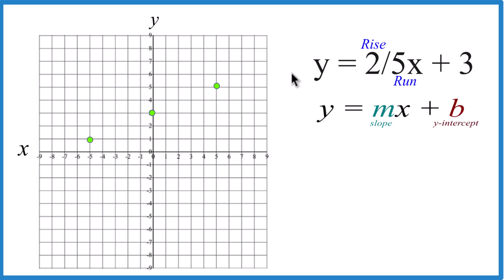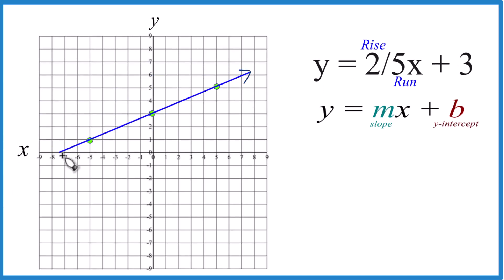And there you have it. The graph for y equals two-fifths x plus three. So let's put a line through this, then we'll put arrows, show it goes to infinity, and that is the graph for y equals two-fifths x plus three using slope-intercept form. Again, you could use a table of values, and you'd get the same answer. This is Dr. B. Thanks for watchin'.